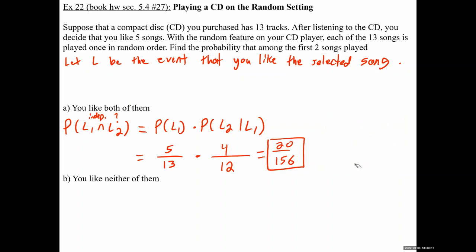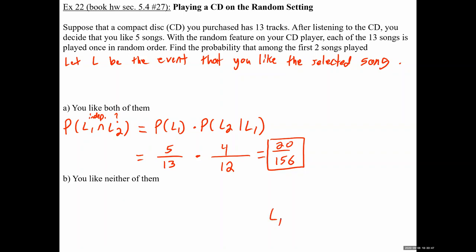Let's do Part B: find the probability you like neither of them. We don't have a formula for 'probability neither,' so we have to rephrase. What does it mean if we like neither of the first two songs? What does it mean about the first song? If we like neither of them, we don't like the first song. The way you write that is with a line on top of L: not-L1.